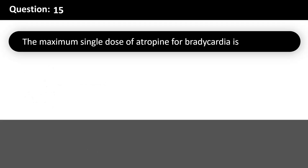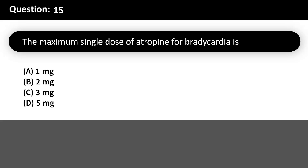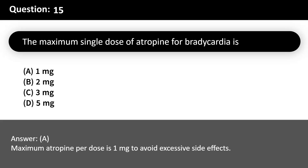The maximum single dose of atropine for bradycardia is: A. 1mg. B. 2mg. C. 3mg. D. 5mg. Answer: A. Maximum atropine per dose is 1mg to avoid excessive side effects.